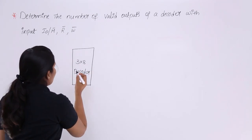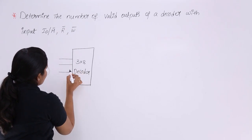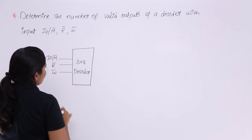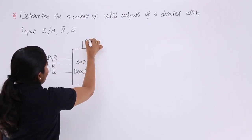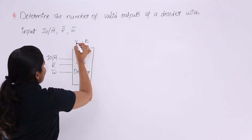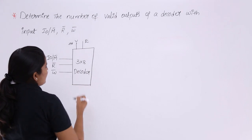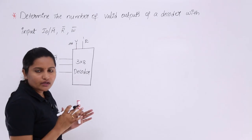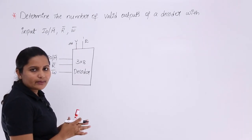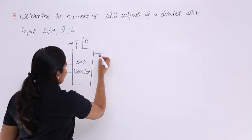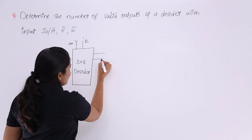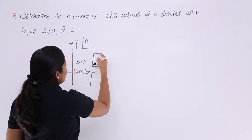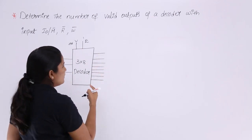The 3-to-8 decoder has 3 inputs: I/O, M, and R-bar, W-bar (read and write). I am also taking an enable line connected to voltage (plus 5 volts). This enable line is always equal to 1. For the decoder to work, the enable line must be equal to 1. The decoder has 3 inputs and 8 outputs.